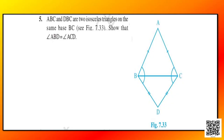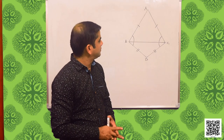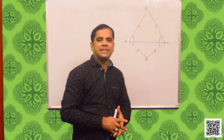Let us discuss question number 5. It says: ABC and DBC are two isosceles triangles on the same base BC. Show that angle ABD is equal to angle ACD. The diagram is given in your book. I have drawn the diagram as given. As per the given data, triangles ABC and DBC are two isosceles triangles and we need to prove that angle ABD is equal to angle ACD.